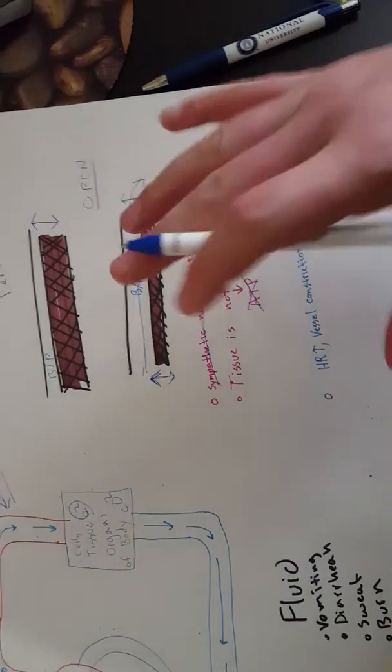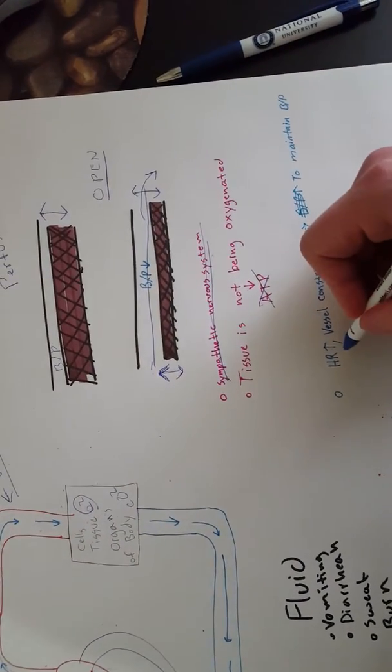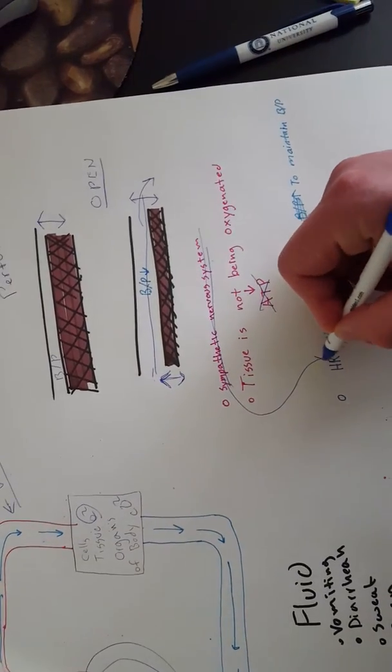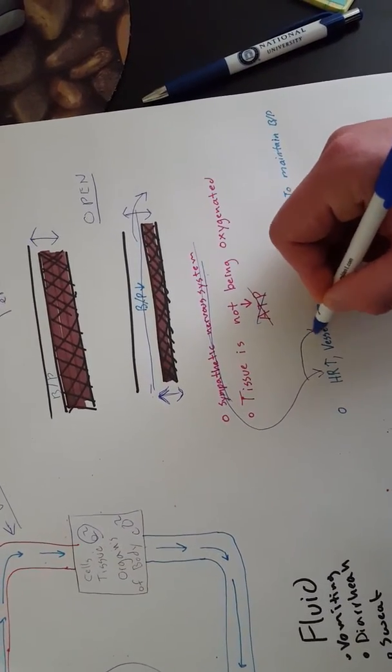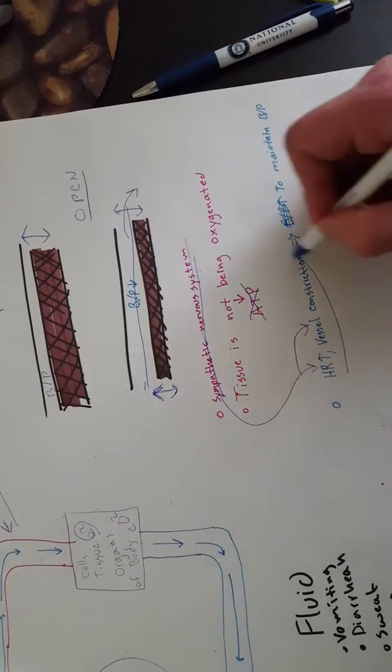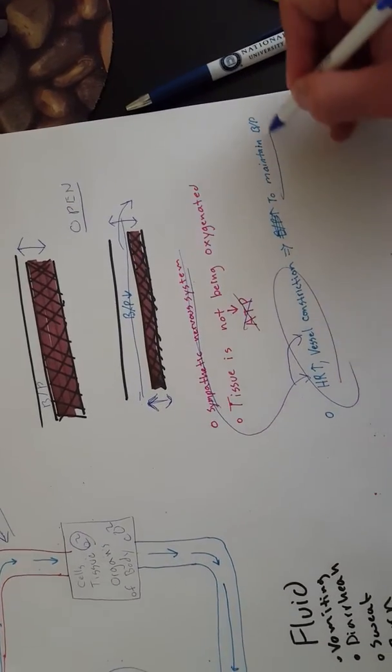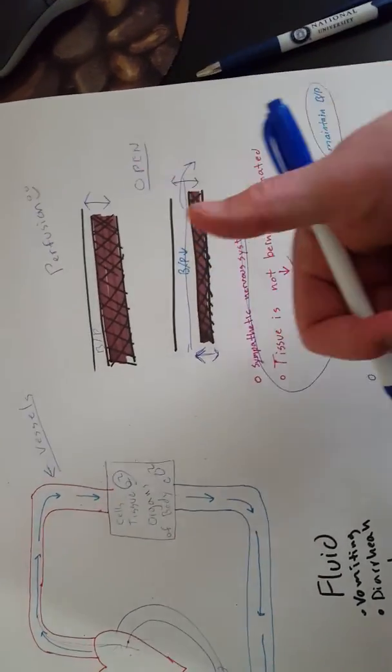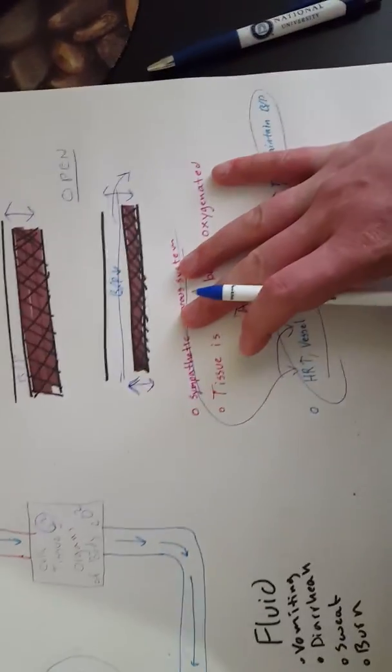Also, your heart rate is going to increase. Your sympathetic nervous system increases your heart rate and constricts your vessels. The whole point is to maintain your blood pressure somewhat. It's trying to bring it up, but you're still going to have a low blood pressure.